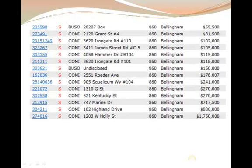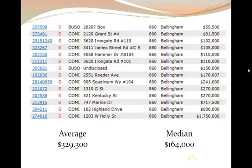Let's look at this for commercial. If you look at all these numbers on the right, the top three sales — 700, 880, and 1.7 — the rest of them are 270 and under. If you add them together, the average is 329,300. The median is 164. Considering nine of these are under 270, the average really isn't very indicative of the market.